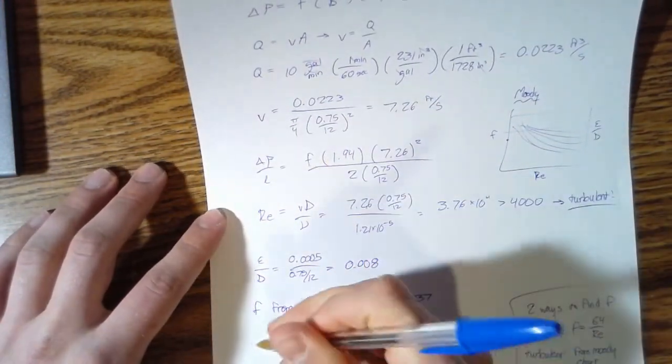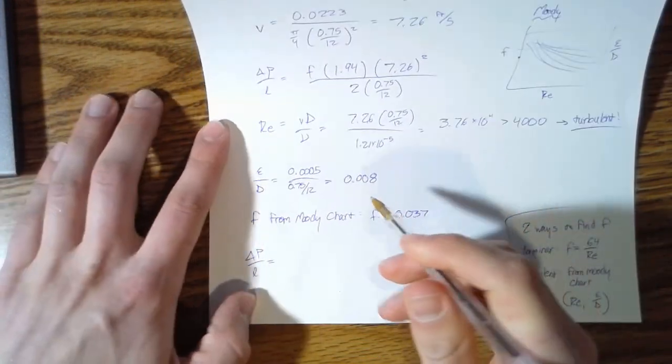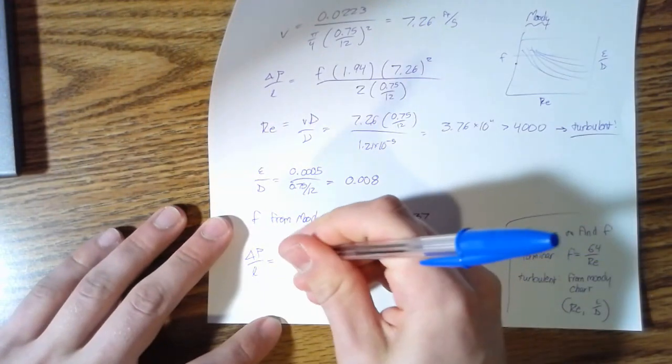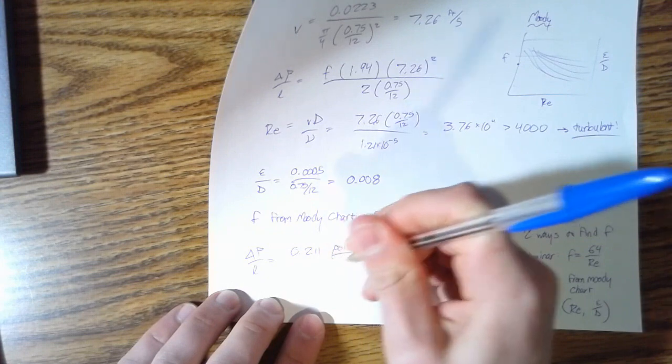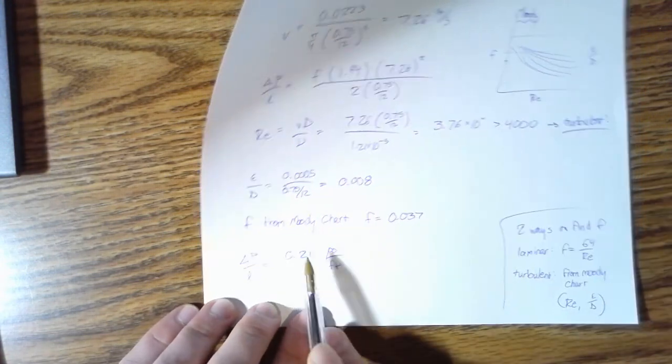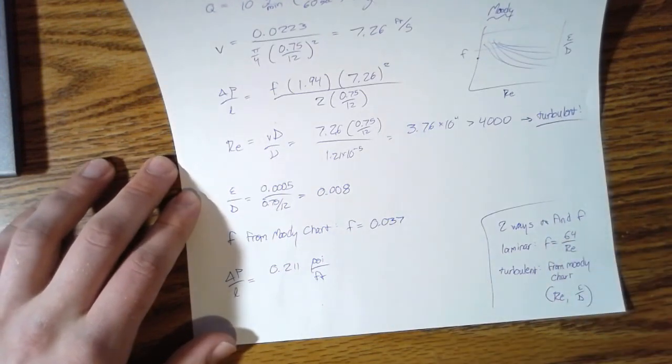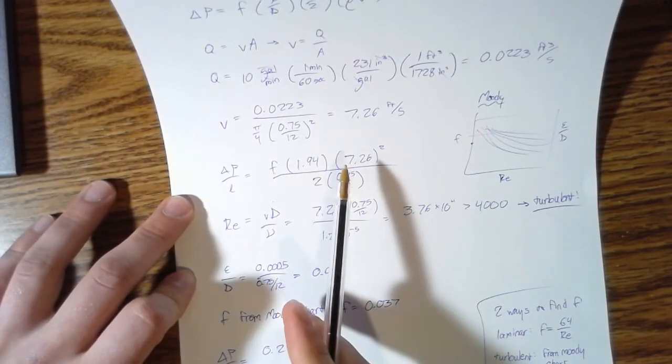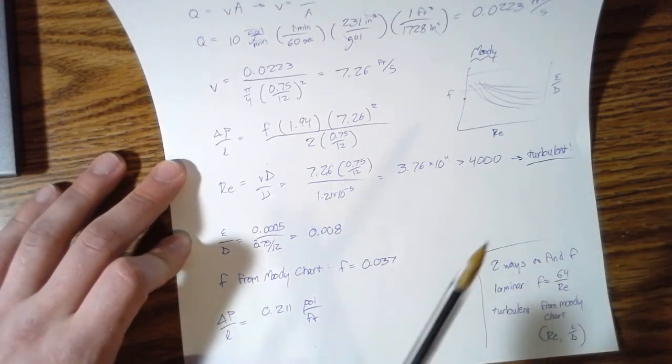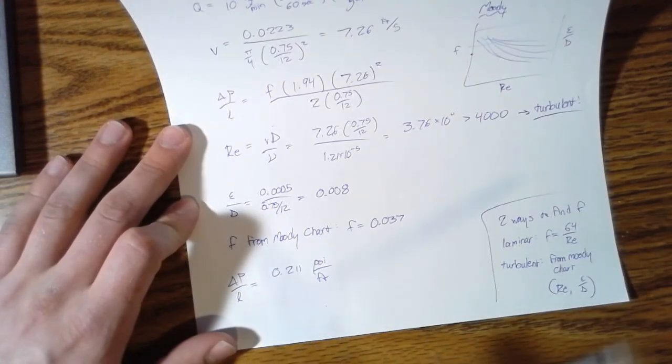So plug that f in back up here. We get delta P over L is equal to 0.211 psi per foot. So if you plug this number in here and then you do the multiplication, you'll have it in pounds per foot squared per foot, but then you do a conversion to psi per foot.